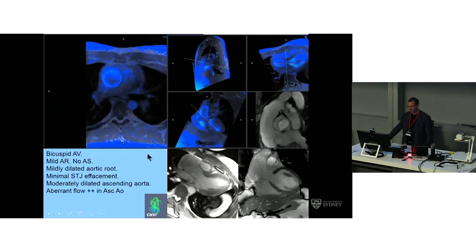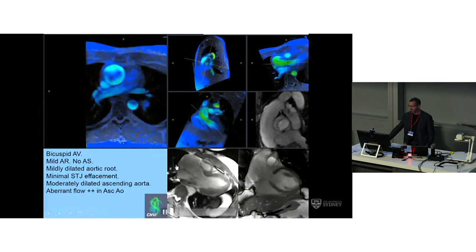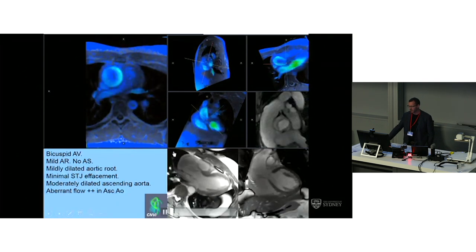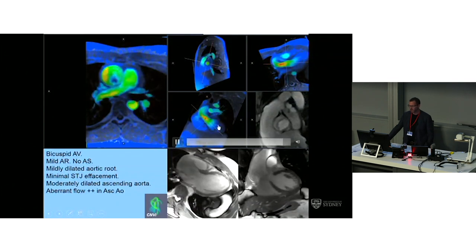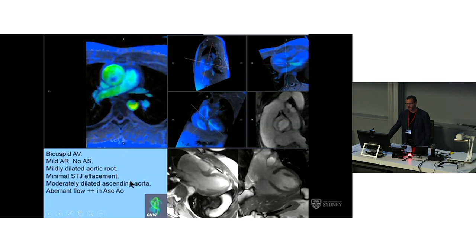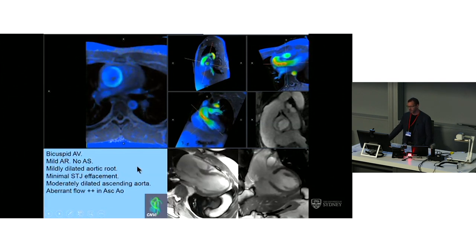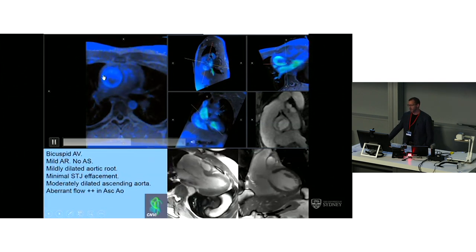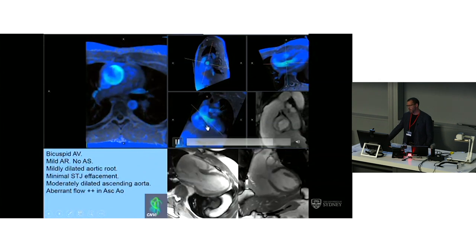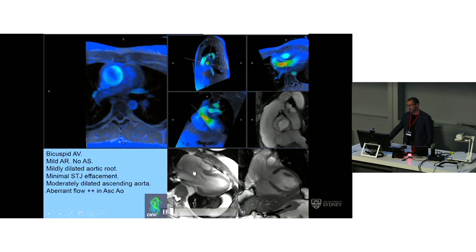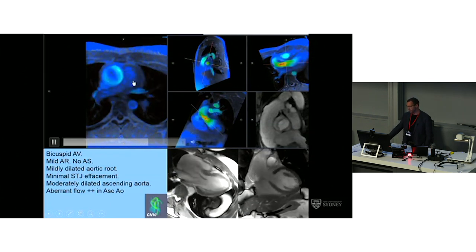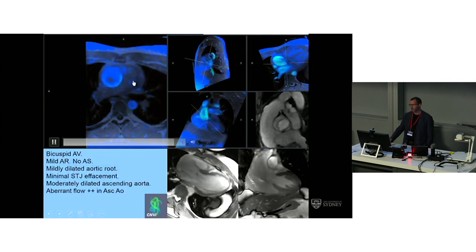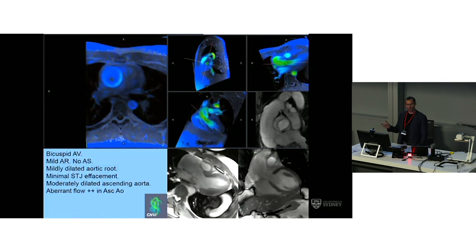Here's another case — a bicuspid AV, as you can see. There is a dilated aortic root and a moderately dilated ascending aorta, about 46 or 47 millimetres, and again, there's terrible flow. That's clearly driven by a couple of things: the valve, the regurgitation to some extent, and the dilatation. It's quite a job to actually untangle what's causing what.